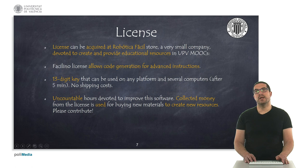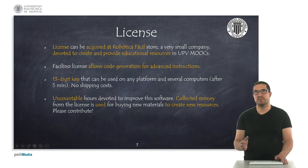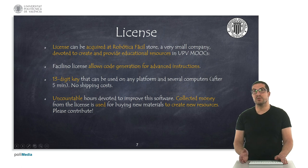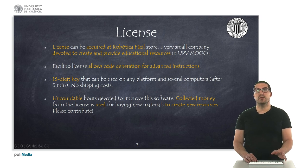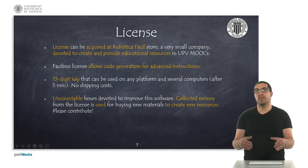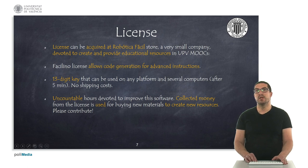The license you can acquire in Robotica's Facilstore, this is a small company which has been created for providing educational resources, specifically for the UPV MOOCs. The license specifically allows you to generate code for specific and advanced instructions, so if you don't have the license, some of the code won't generate. And it is a thirteen digit key that you can use on any platform, so the license is the same for every platform and use it in several computers. You just simply have to wait five minutes between changing computers. There's no shipping cost in acquiring the license. And you have to think about that, we have expend uncountable hours in developing and improving this software, so all this money we collected and we use it for creating new examples, new projects, and so that's why we ask you for contribution.